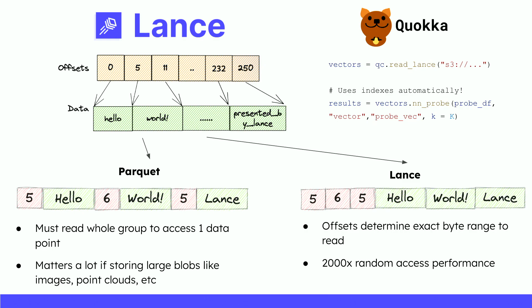Parquet is laid out in a way where offsets and data are interleaved with each other, meaning you have to read the entire row group to access one data point. If you're storing large blobs like images, that makes a huge difference in performance. With Lance, we've separated the offsets from the data so we can know exactly what byte range we need to read to get one image or one audio sample. This is one of the primary factors that gives us much better random access performance, which in turn gives us really great indexing performance. The integration into Quokka will look almost identical to the Parquet integration, so you don't have to think about how your data is stored on disk or S3, but Quokka will know if an index is available and can push down the nearest neighbor query to the Lance index.